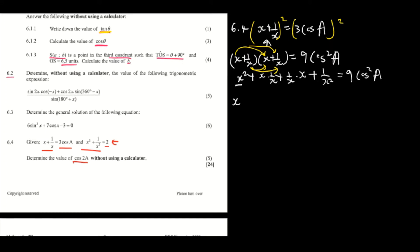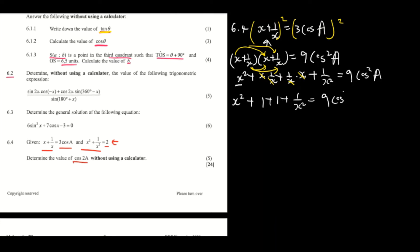Collecting terms, we write x² plus 1 plus 1 plus 1/x², which simplifies to x² + 2 + 1/x² equals 9cos²(a).